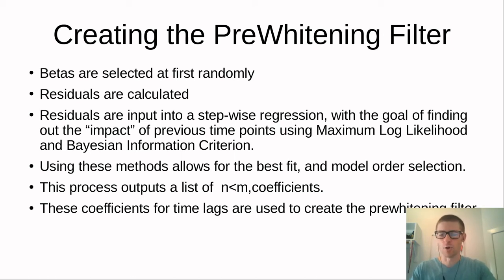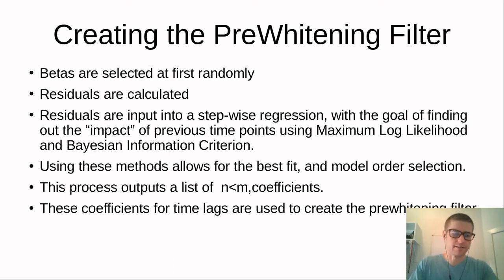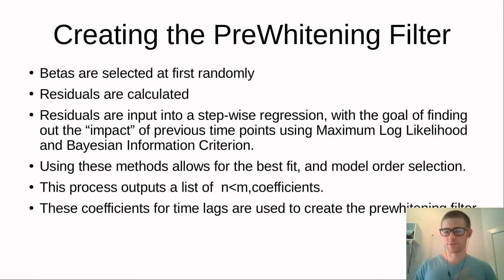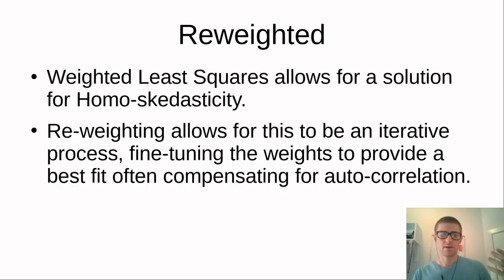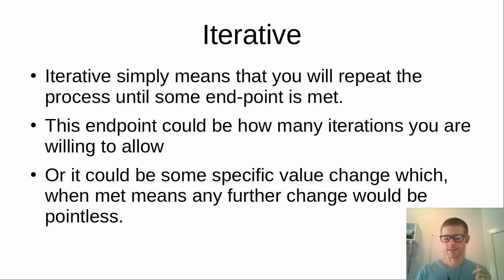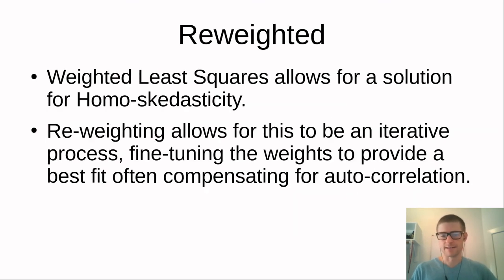Instead of ordinary least squares, maximum log likelihood is used — it has the same goal but provides more flexibility. The output is fed into the Bayesian Information Criterion (BIC), which acts as a threshold. If the fit exceeds the threshold, the process stops; if not, it continues. The final output is a list of coefficients, one for each time lag. If you have five time lags you get five coefficients, and the number of lags is determined by the threshold value.